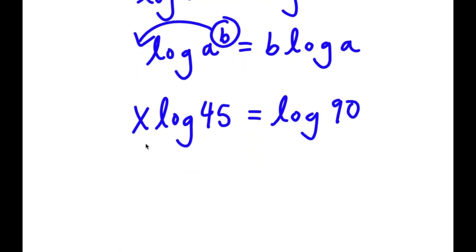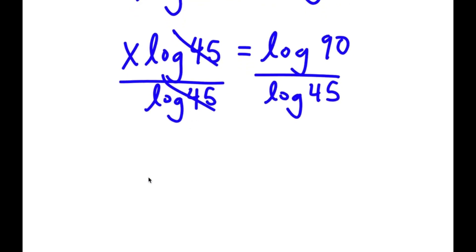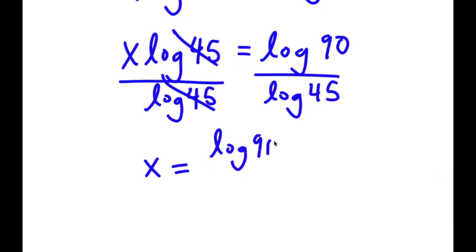If I divide both sides by log 45, these two cancel out. And now I have x is equal to log 90 over log 45.